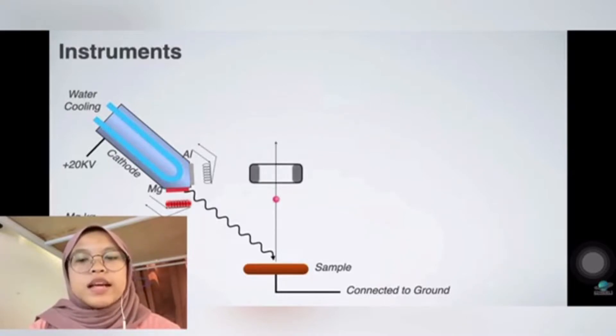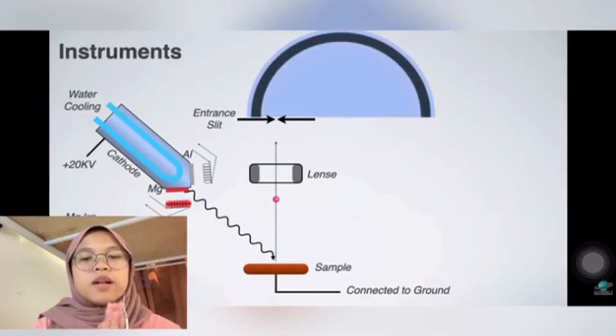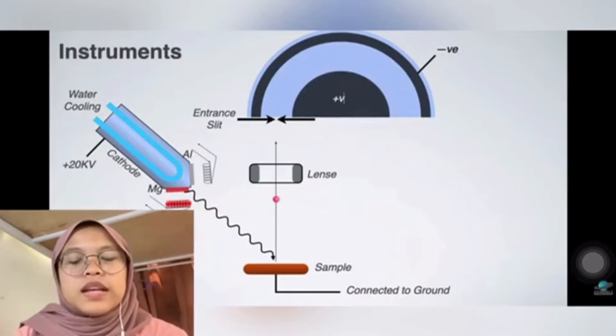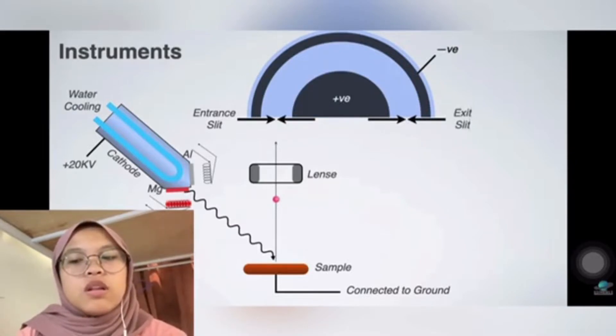Most of the commercial XPS instruments have hemispherical analyzers. Generally, the ejected electrons travel in a straight line, but when they enter the hemispherical analyzer, the electrons are attracted by the positive electrode and repelled by the negative electrode. Due to this electric field, the straight line of the electron path is bent in the direction of the electrode. Electrons with high velocity or kinetic energy will be bent to a lesser extent and collide with the outer wall of the path.